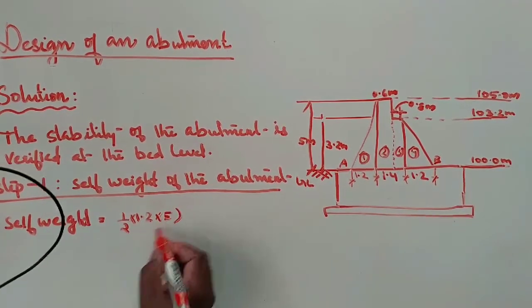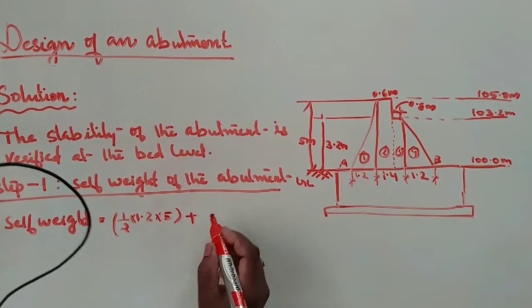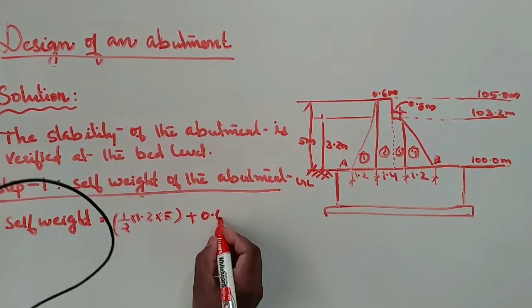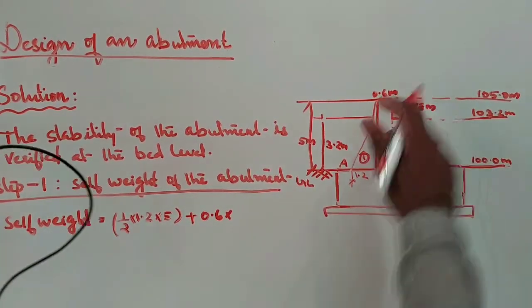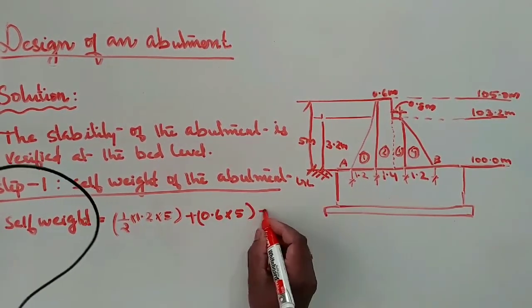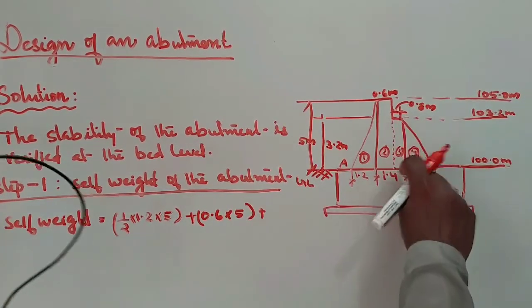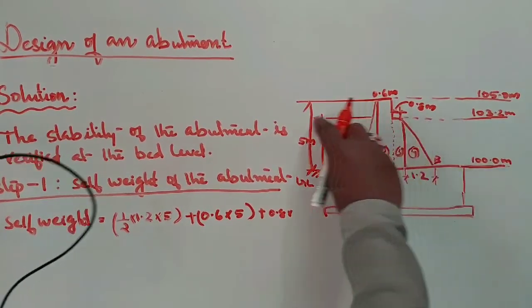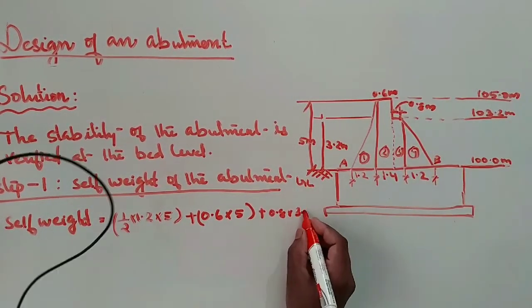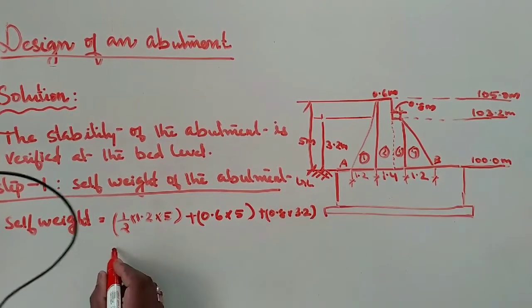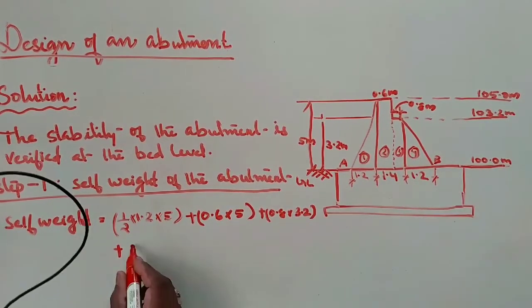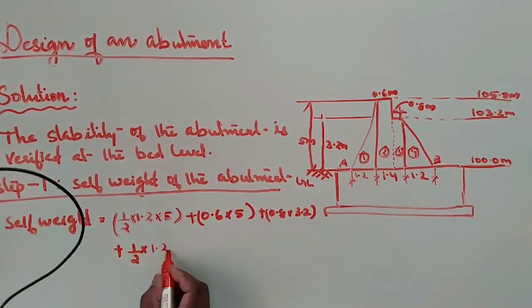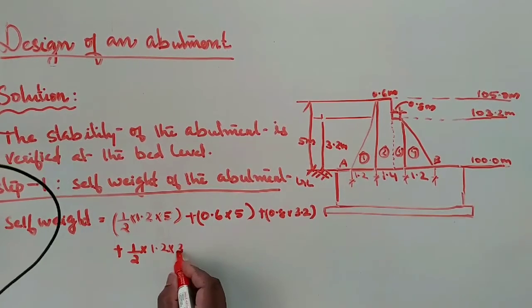Plus second section: it is a rectangular portion 0.6 into 5 height. Plus next third section: 0.8 into 3.2 height. Plus then again triangular: half into 1.2 into its height 3.2, whole into